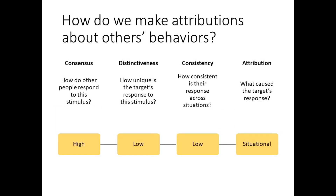Now imagine your friend is running late to dinner, but there's a blizzard outside. Same target, same stimulus, same response, but a different situation. You would expect other people to be late for dinner considering the weather, so consensus is high. It is still normal for your friend to be late for dinner in bad weather, so distinctiveness is low. But now imagine your friend is not usually late to work or school in good weather or in bad weather, so consistency is low. In this example, you would likely attribute your friend's lateness to the situation — the blizzard is the cause of their behavior.